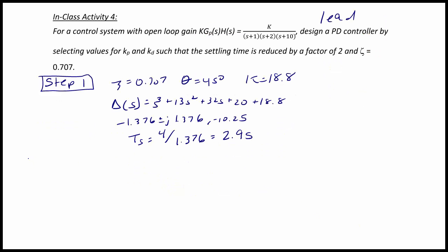Step 2: To reduce the settling time by a factor of 2, the desired settling time is now 1.45 seconds. Which means that σd' is equal to 2.75 and ωd', the new desired damping frequency, would be 2.75. So our desired new poles are -2.75 ± j2.75.